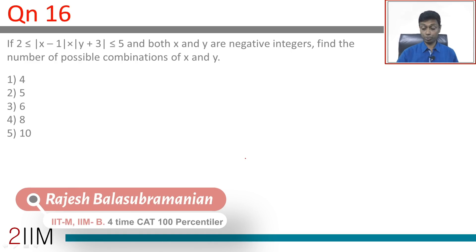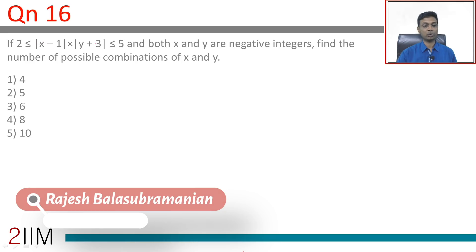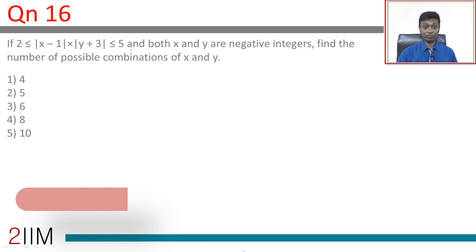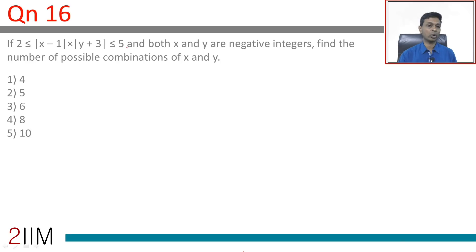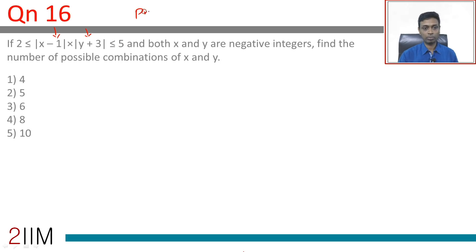Let's discuss the scope step by step. 2 ≤ (x-1)(y+3) ≤ 5, where x and y are negative integers. Find the number of possible combinations of x and y. Since x and y are negative integers, (x-1) and (y+3) are integers, so their product is an integer. The product could be 2, 3, 4, or 5.